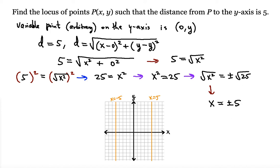So there are two equations: x equals 5 and x equals negative 5. This corresponds exactly to what we determined graphically — the vertical lines parallel to the Y-axis are the loci. This is an algebraic verification of that.